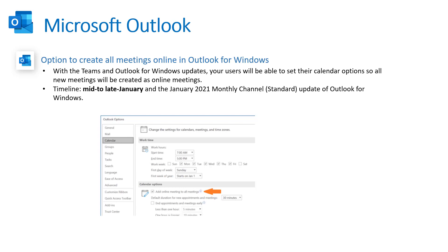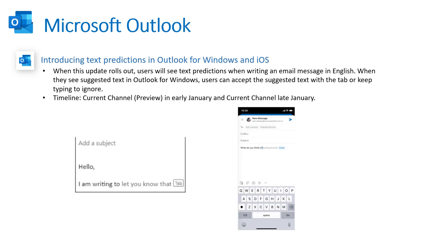Moving on to Outlook — there's an announcement applicable to end users where they can now add a Teams meeting by default to all meetings they generate. Within the thick client, when you create a meeting, your meeting configuration, dial-in number, and everything will already be on the invite itself rather than having to add it manually. Unfortunately, there's no group policy to turn this setting on — it's something the user has to configure themselves — but it's worth creating documentation for. This will be coming out mid to late January for Outlook for Windows.